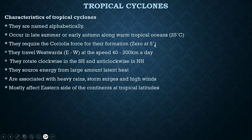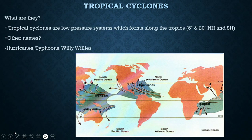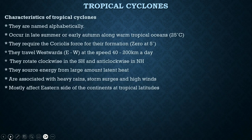Tropical cyclones travel westwards — from east to west — as shown by the trajectory on this diagram. They travel at a speed of about 40 to 200 kilometers per day. In the southern hemisphere they rotate clockwise, and in the northern hemisphere they rotate anti-clockwise.